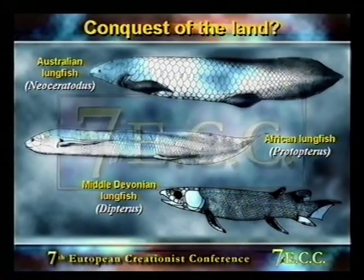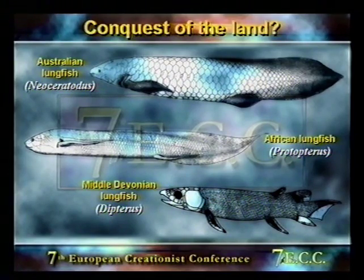Today we classify the lungfishes, the coelacanths, and a group called the rhipidistians in a single group — the lobe fins, the Sarcopterygii. They are prominent in late Paleozoic fish faunas; today they're only represented by four genera. Opinion then moved on from the crossopterygians to another lobe-finned group, the rhipidistians, and in particular one very famous rhipidistian, Eusthenopteron.